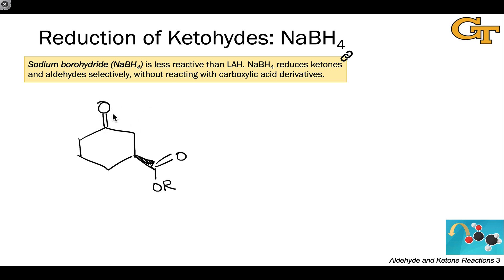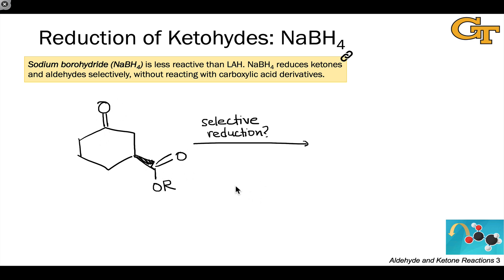What if we'd like to synthesize a cyclohexanol from this by reducing this carbonyl functionality? Is there a way to reduce only this C=O double bond in the presence of the ester through some kind of selective reduction? If we treated this with lithium aluminum hydride, both the ketone group within the ring and the ester substituent would be reduced.